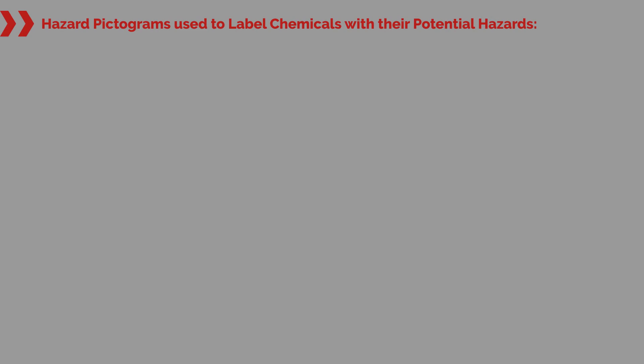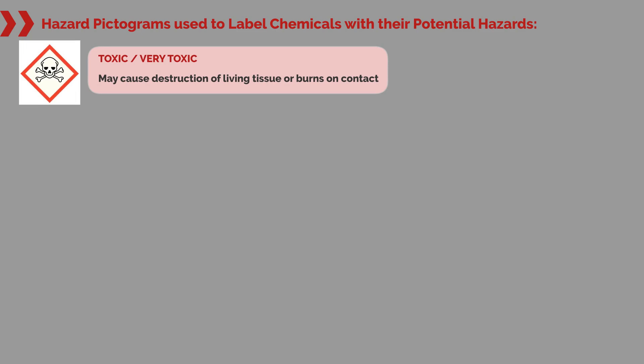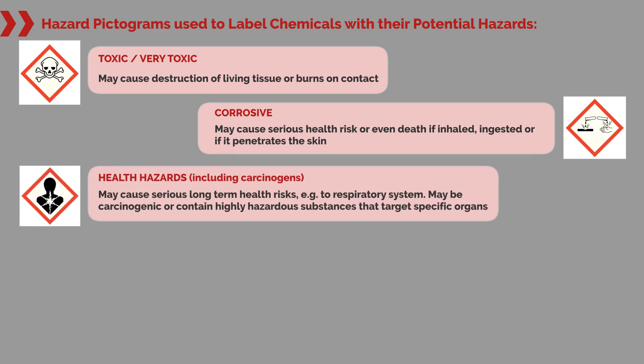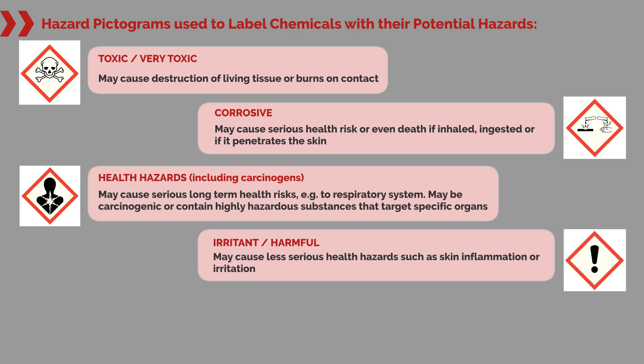Hazard pictograms are used to label chemicals with their potential hazards. Toxic / Very toxic: may cause destruction of living tissue or burns on contact. Corrosive: may cause serious health risk or even death if inhaled, ingested, or if it penetrates the skin. Health hazards including carcinogens: may cause serious long-term health risks, for example to the respiratory system, may be carcinogenic, or contain highly hazardous substances that target specific organs. Irritant / Harmful: may cause less serious health hazards such as skin inflammation or irritation.